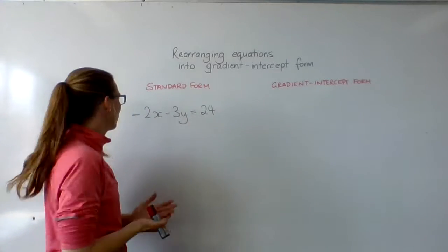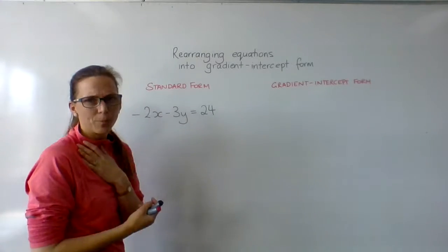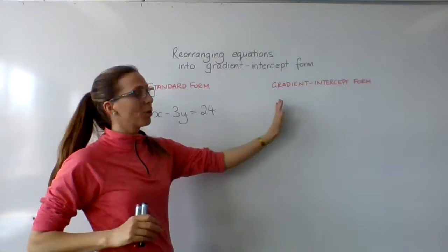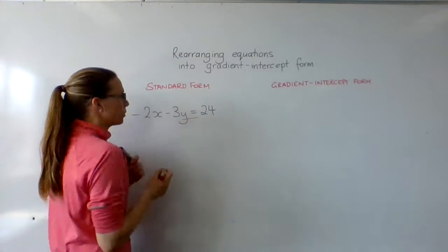So here we are with our second example. We've got -2x - 3y = 24 and that's in standard form. We want to change it into gradient-intercept form. So we want to keep our y equals over here.